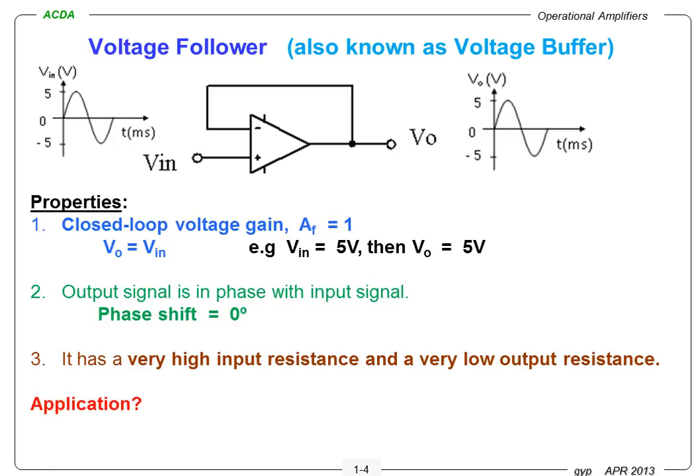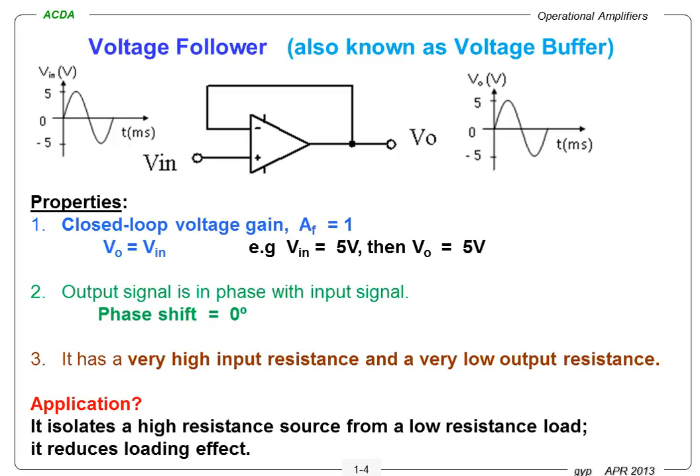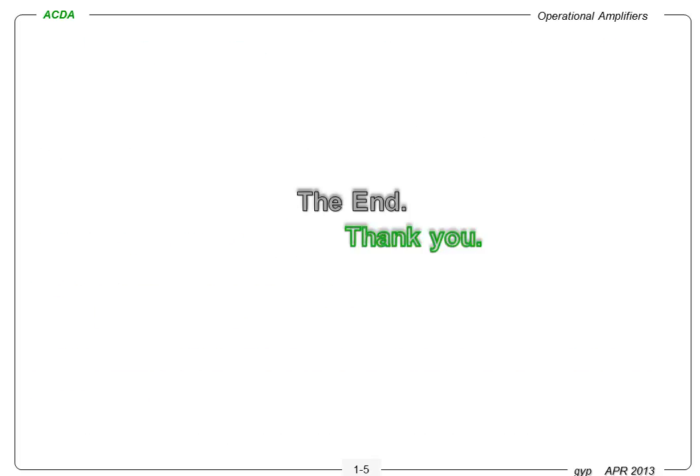The application of a voltage follower is that it can isolate a high-resistance source from a low-resistance load, and it can reduce the loading effect. This application will be illustrated in Part 2 of the voltage follower video clip. That's all for now. Thank you.